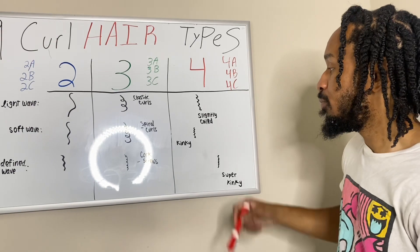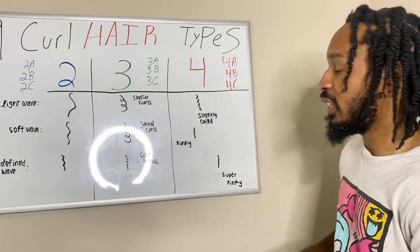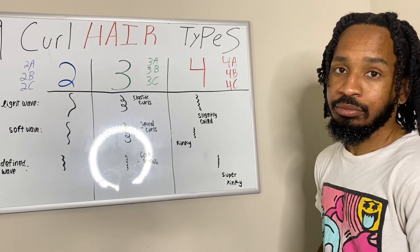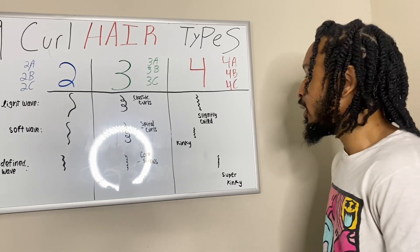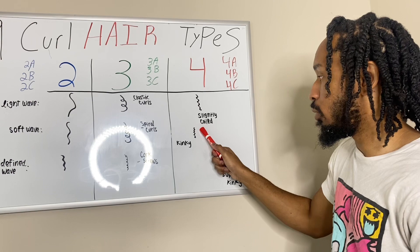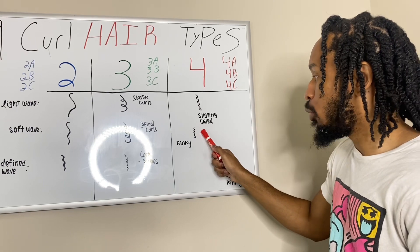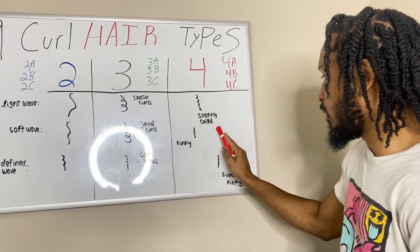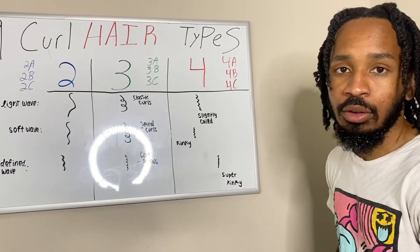Now when you come to 4B, this is the kinky hair. This is going to be the more zigzag curl — it's more so like a zigzag going down.